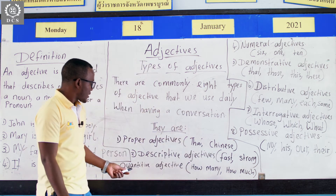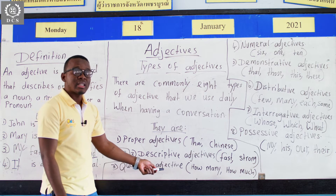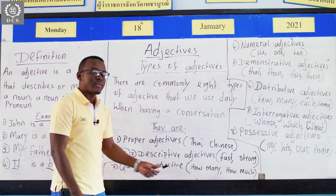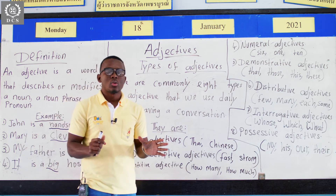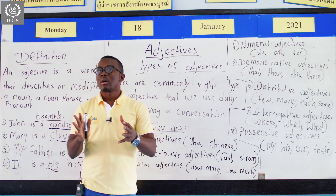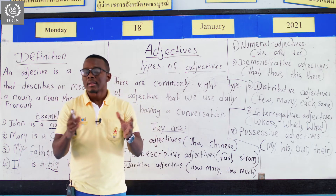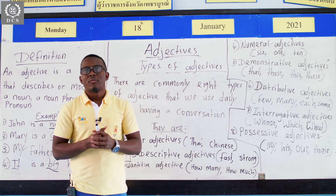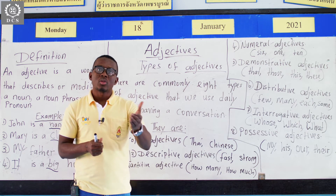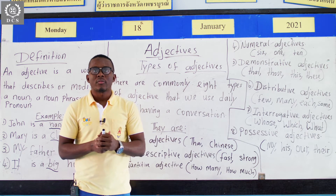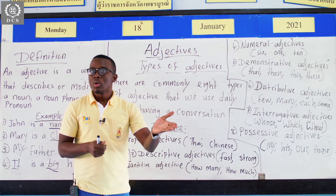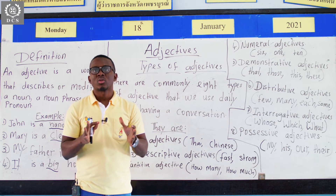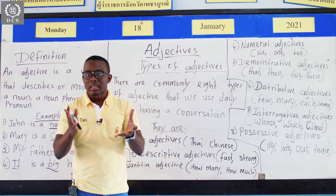The third one is quantitative adjectives. This one is used to describe quantity — how many or how much. For example: how many books do you have? Or how much milk is in the box? So they are used to describe quantity.